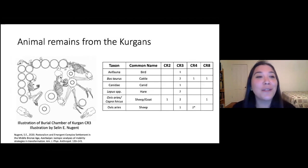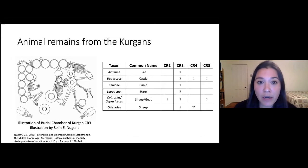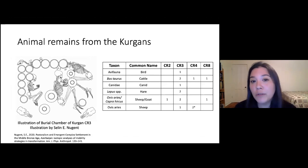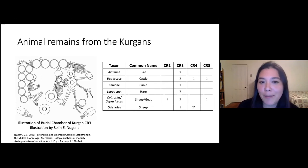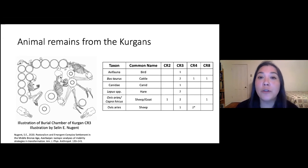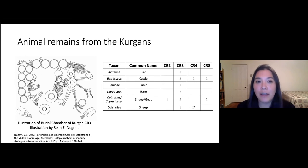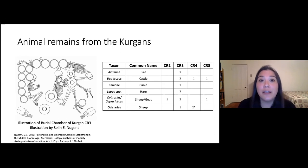Of the 10 kurgans we excavated, four of them had animal remains, and for the most part the most common types of animal remains are the same animals that showed up most frequently in the settlement trash. What this is showing is not the number of bones found, but rather the minimum number of animals that would need to die to account for the bones found in the kurgan. It seems like the animals that were important companions for people in life — the cattle, sheep, and goat they were raising — were also the important animals to attend to them in the afterlife.